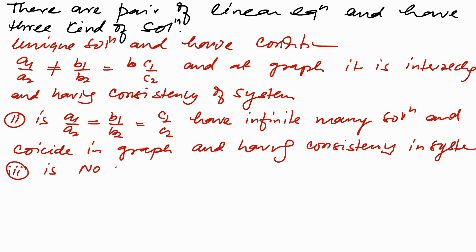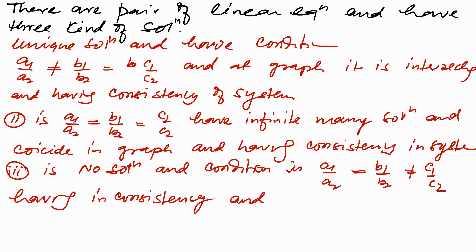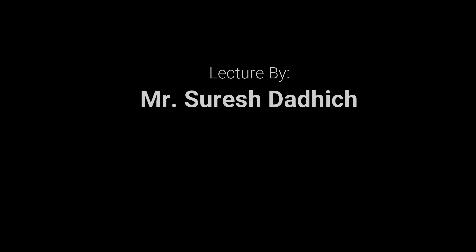And condition is a1 upon a2 equals to b1 upon b2 should not equal c1 upon c2, having inconsistency. And at graph there are couple of parallel lines.